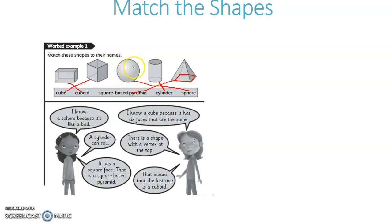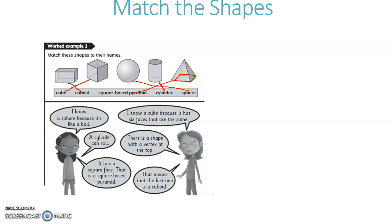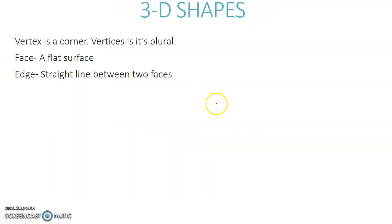A sphere does not have any flat surfaces — it is spherical in shape and can roll. Similarly, a cylinder can roll but it has 2 flat surfaces. A pyramid points to a vertex and its sides are triangles. This is a square-based pyramid. So, we have matched the shapes with their names.